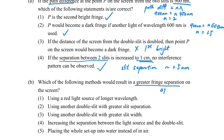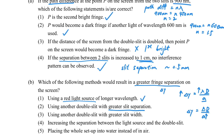Which changes result in a greater fringe separation? Using delta y equals lambda d over a: if we use a red light source, the wavelength is longer, so delta y increases. If we increase the slit separation a, then delta y decreases, so that statement is wrong.